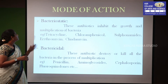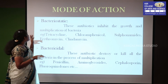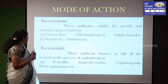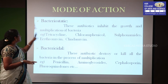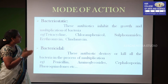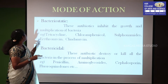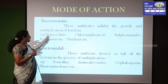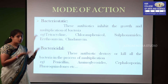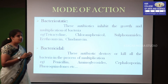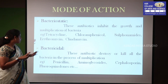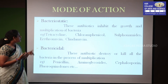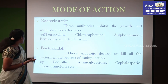Next, mode of action. We classify it into two types: bacteriostatic and bactericidal. Bacteriostatic means inhibiting the growth and multiplication of bacteria; for example, tetracycline, chloramphenicol, sulfonamide, erythromycin, and clindamycin. Bactericidal means killing or damaging the bacteria; for example, penicillin, aminoglycosides, cephalosporin, and fluoroquinolones.